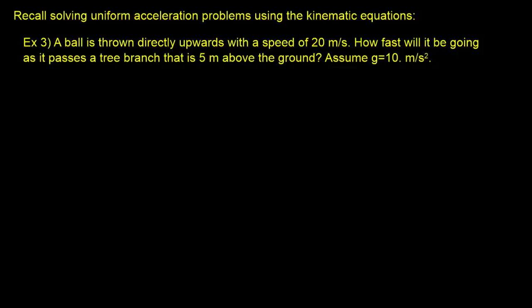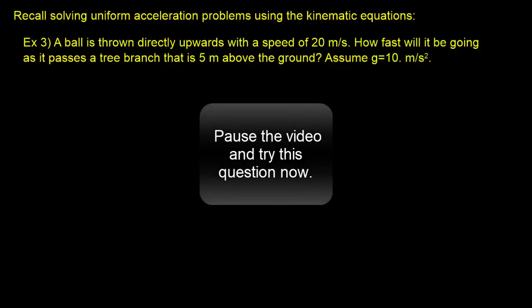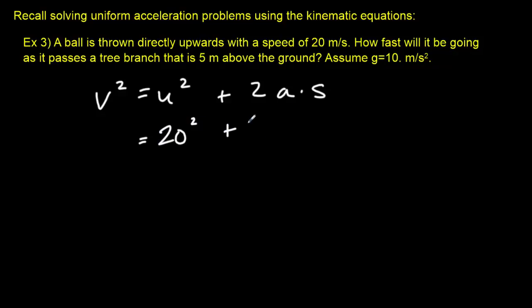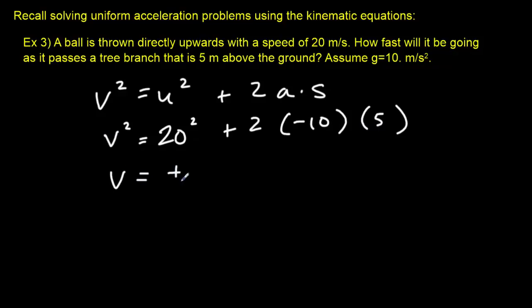Here's an old kinematics problem to indulge. Since time is not involved, we use the no-time equation: v² = u² + 2as, where s is displacement, using standard IB variables. Plugging in an initial speed of 20 m/s, acceleration of negative 10 downwards, and displacement of 5 meters, we get v = 14.4 meters per second. There are two answers: the object could be going upwards at 14.4 or downwards at 14.4 m/s.